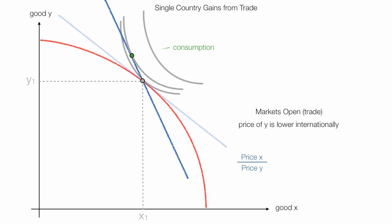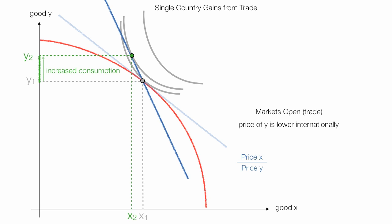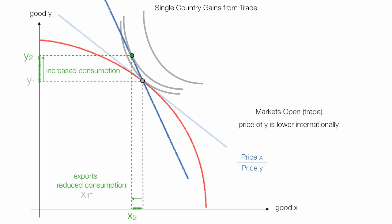At first, the country imports more of good Y and consumes less of good X. The country begins to increase its consumption of good Y through imports, and the import level is Y2 minus Y1. The country needs to export some of good X, so it reduces consumption of good X by X1 minus X2. It exports good X, and this is how it pays for the import of good Y.